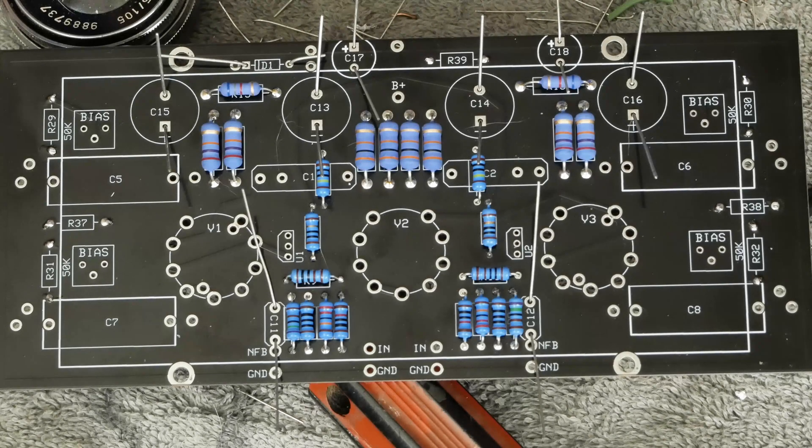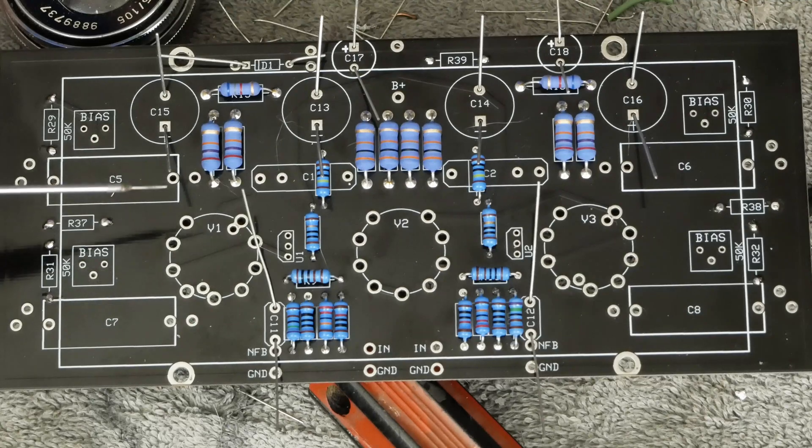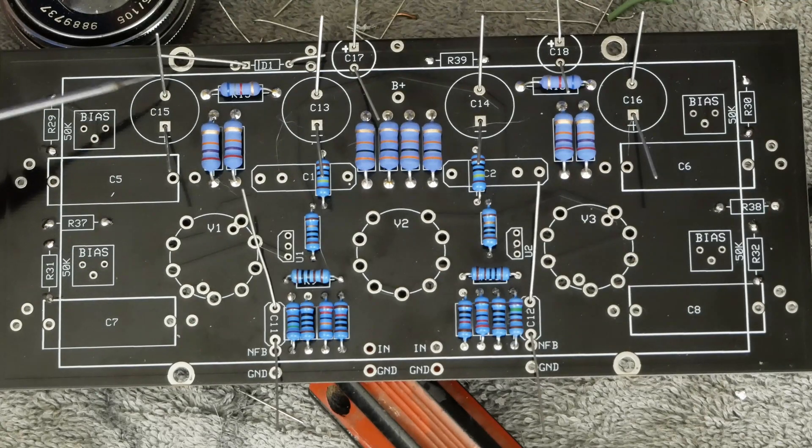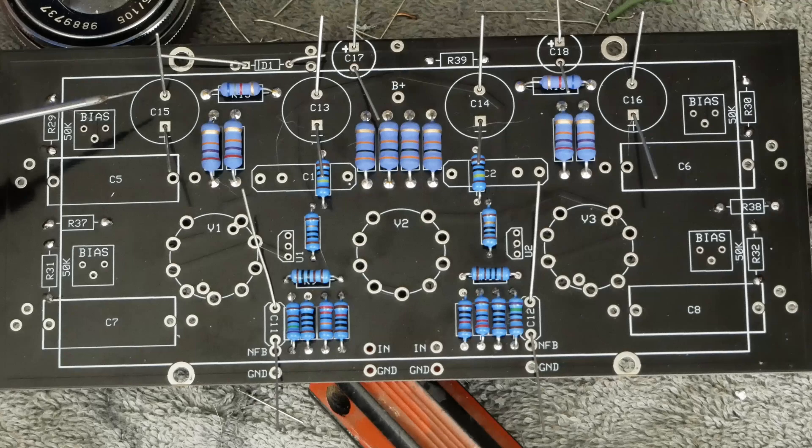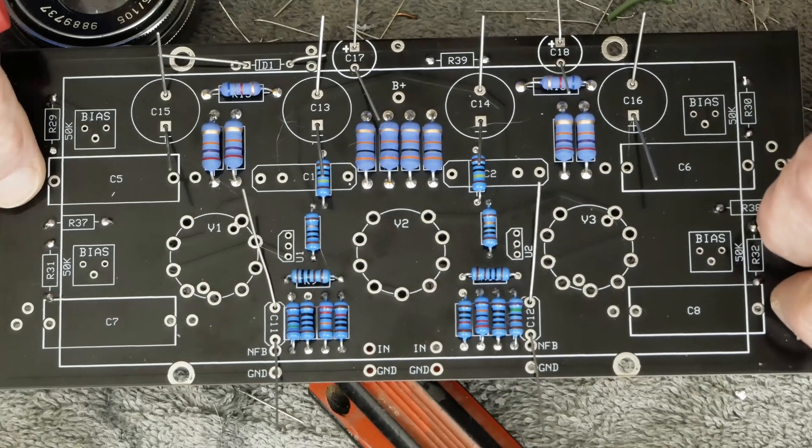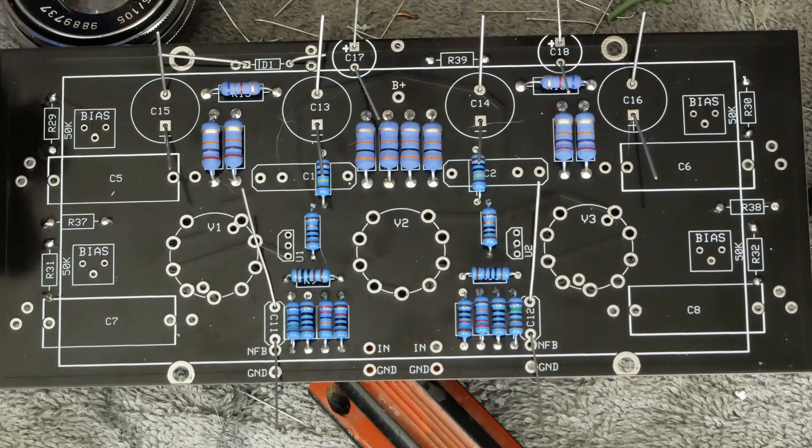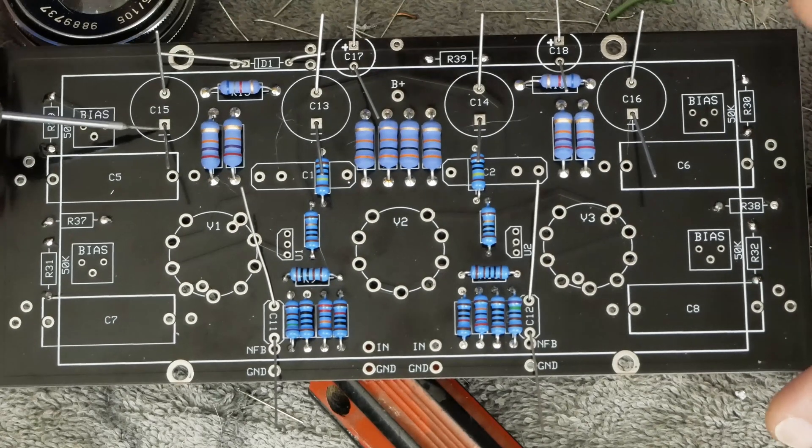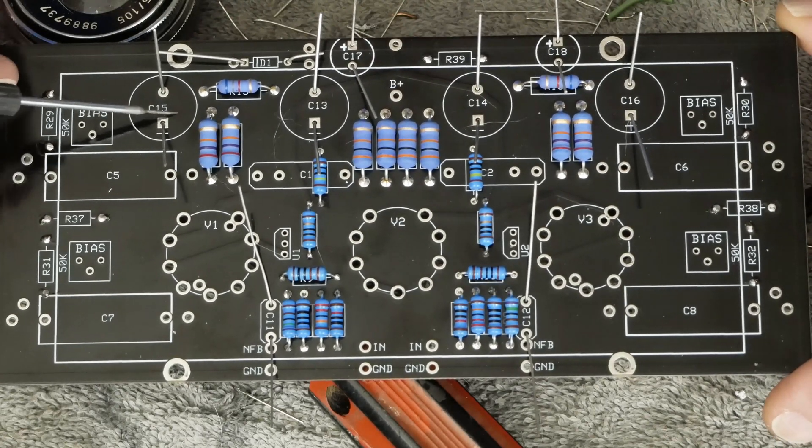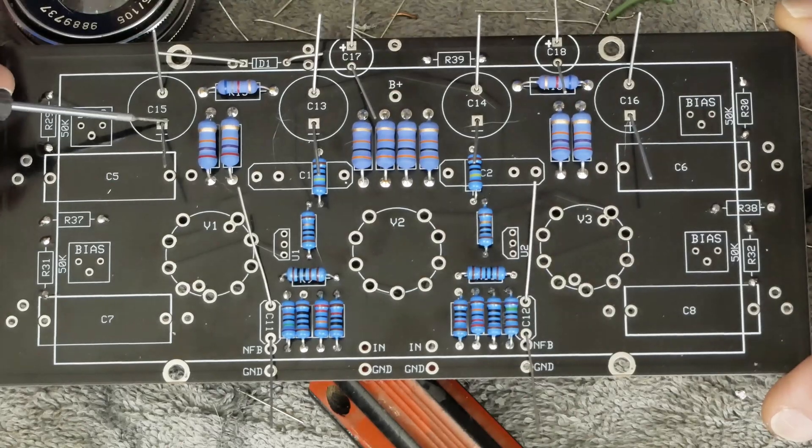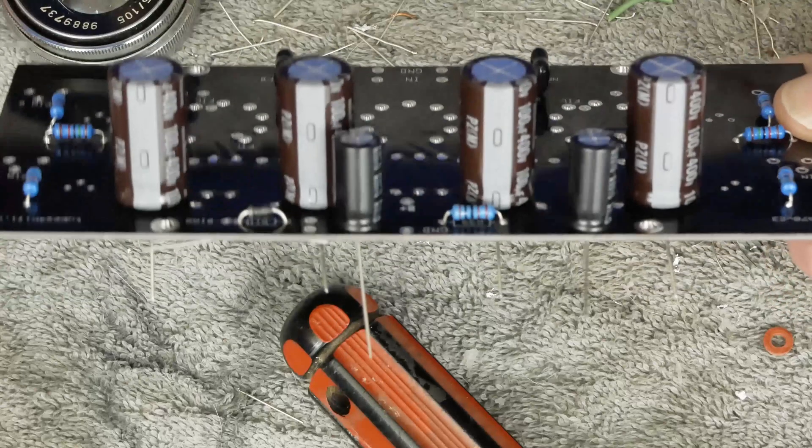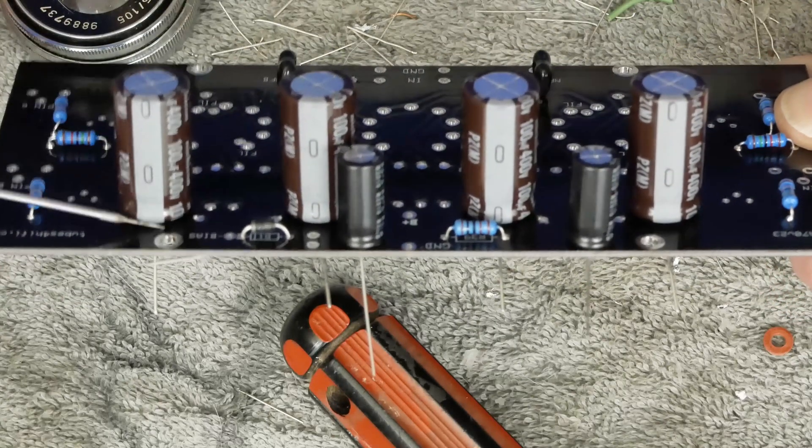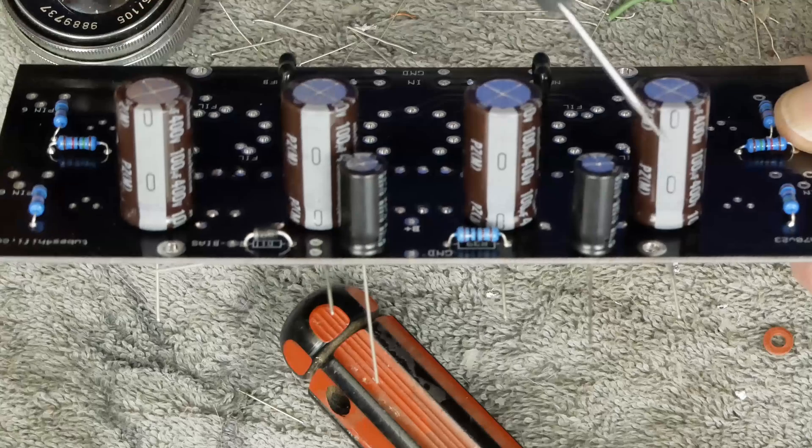Okay, so we're ready to solder these capacitors in place. And one thing that's very important is these capacitors are polarized or they have polarity. And so you need to make really sure that you're putting them in in the right orientation. The square hole or the square little pad is the positive and the round one is the negative. And the caps are very clearly marked negative. So make sure that the negative is going in the right direction.